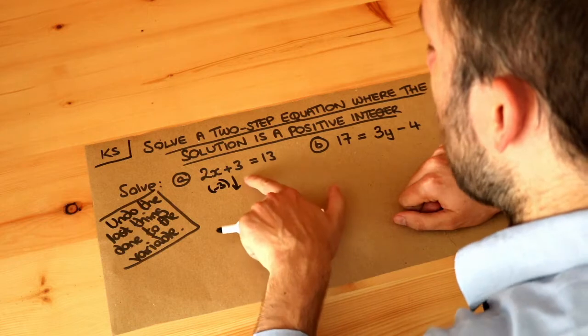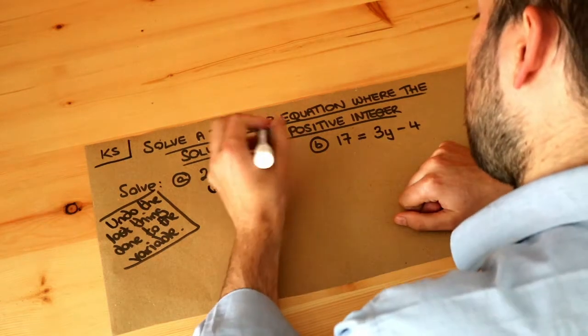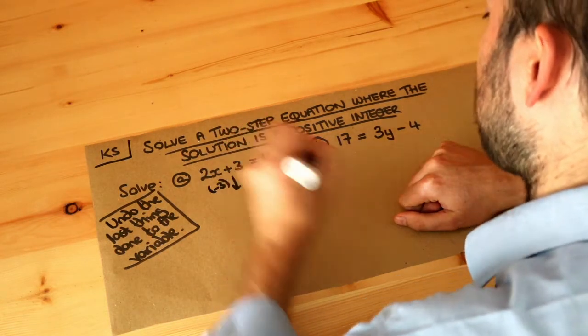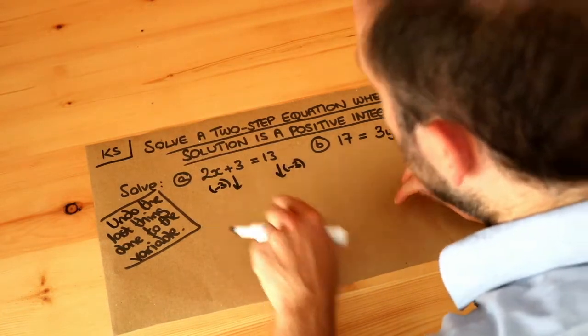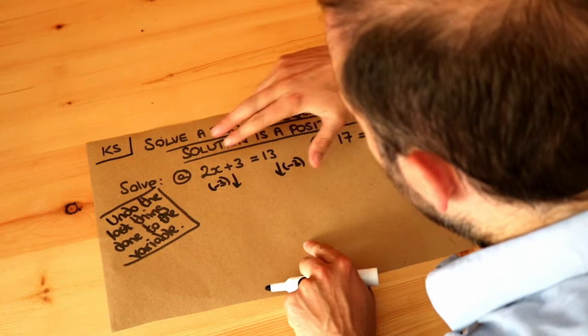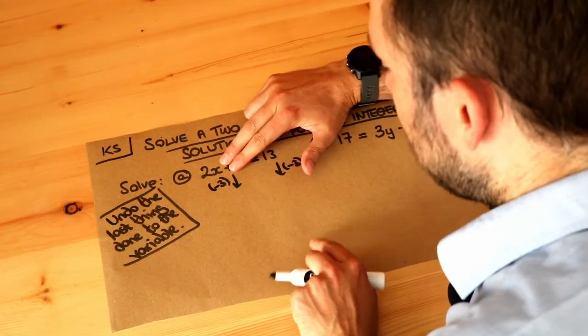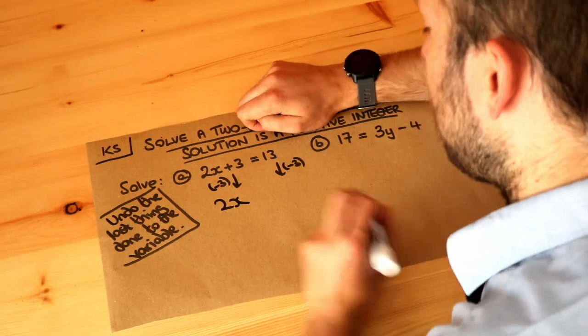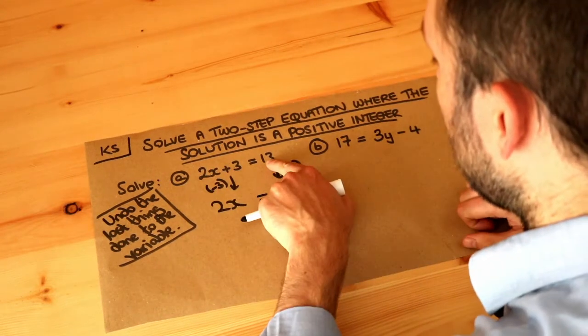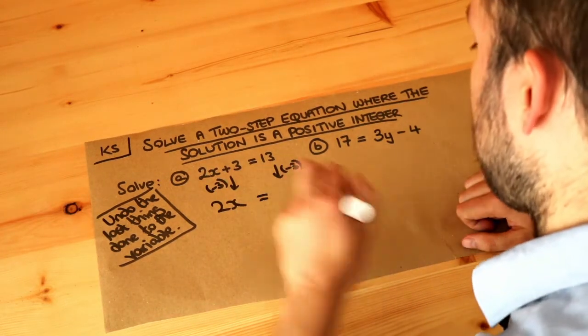And as I said earlier, whatever you do to one side of the equation, you have to do the same to the other. So we're going to subtract 3 from the other side of the equation to keep it balanced. So subtracting 3 from the left-hand side gets rid of that plus 3, so we're just left with 2x. The plus 3 is gone. And on the right-hand side of the equals, 13 minus 3 is 10. And we're gradually getting a simpler and simpler equation.